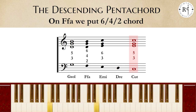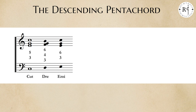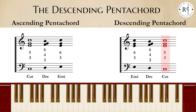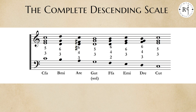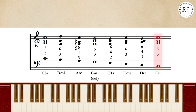The note that remains — D Re — can be treated as the beginning of the ascending pentachord. So, we put the third, fourth and sixth chord on D Re, completing the descending scale. And now, unifying the ascending and descending scale, here is the complete rule of the octave in C major.